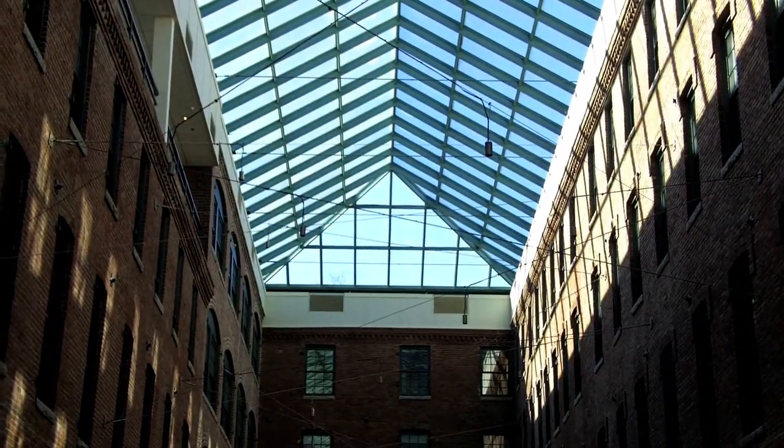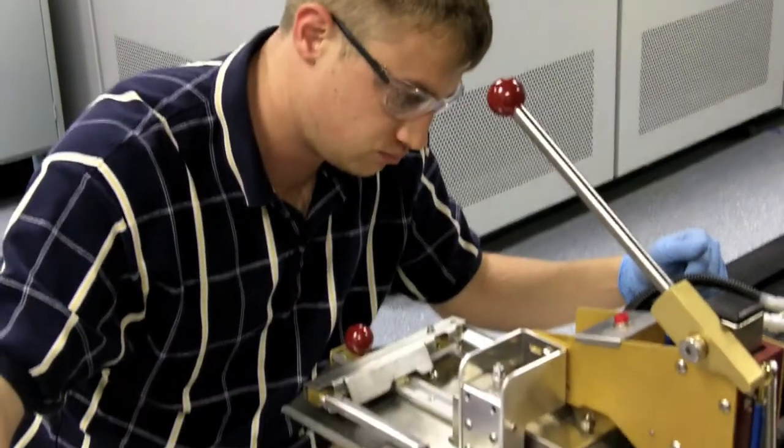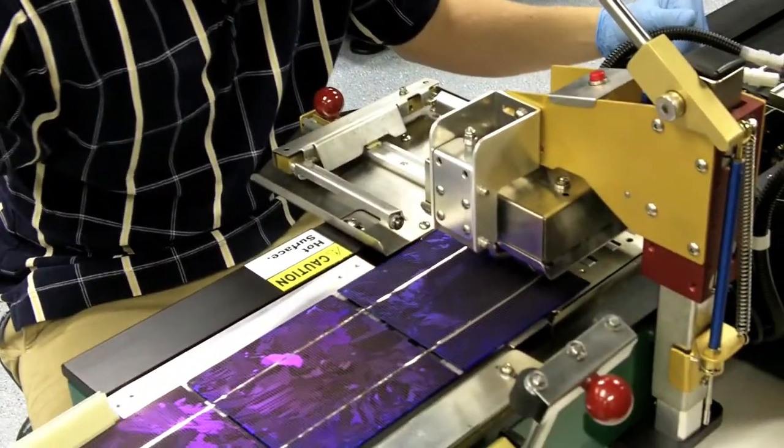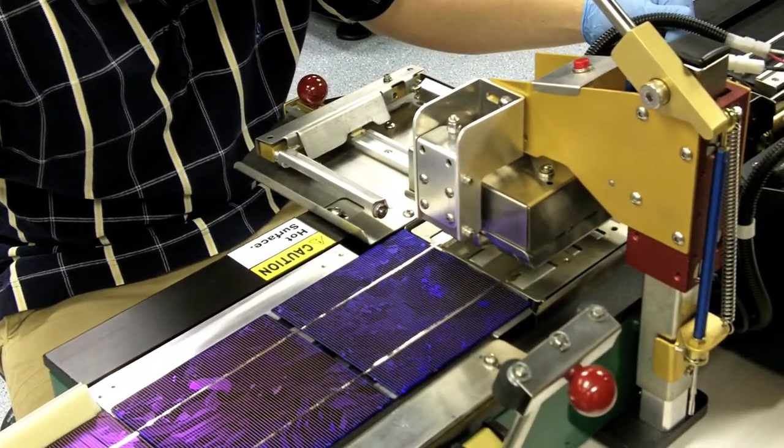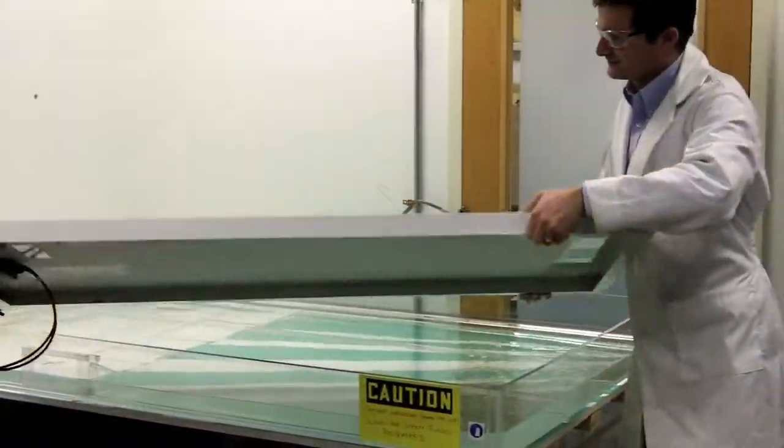While most researchers focus on improving solar cells, the active component of a solar panel, these labs work to improve the rest of the system: the way the cells are connected, protected, and installed, which together account for more than half of the cost of solar power today.